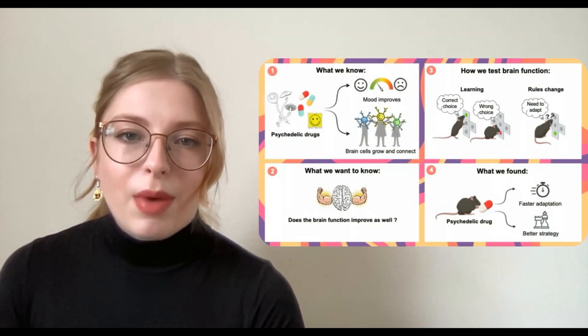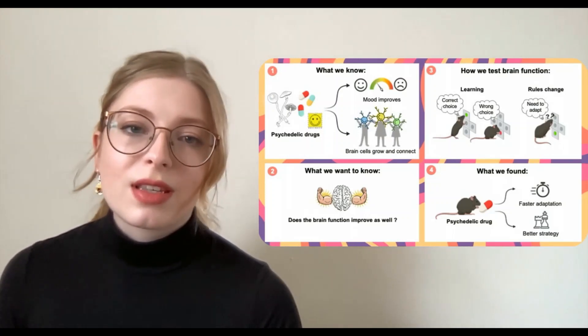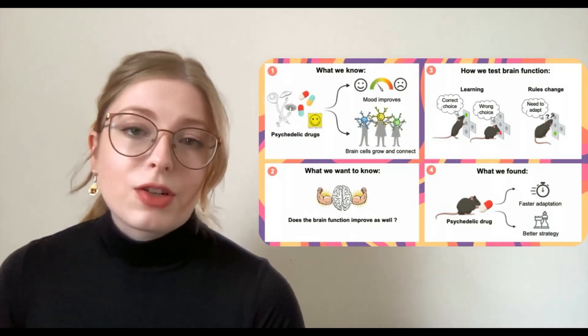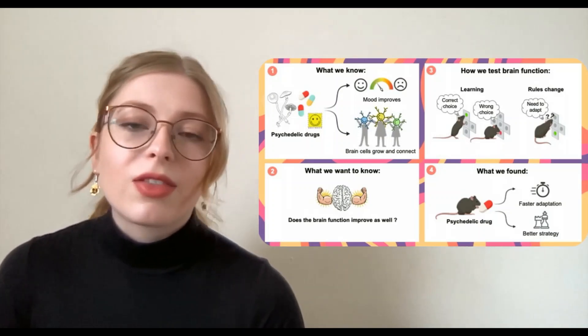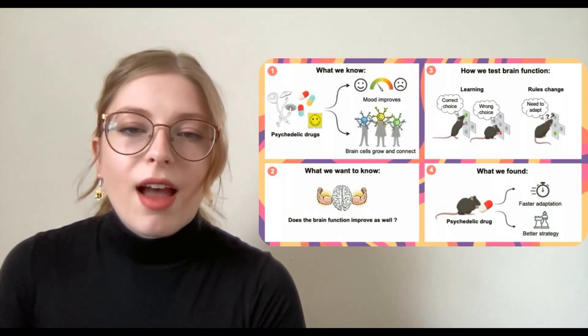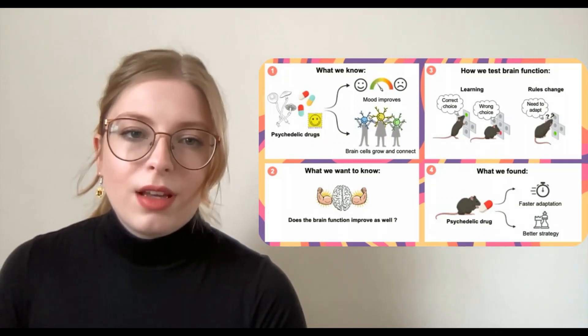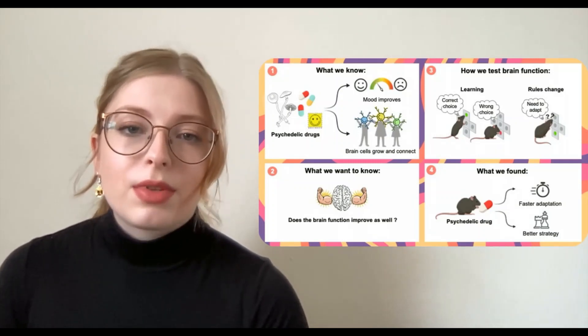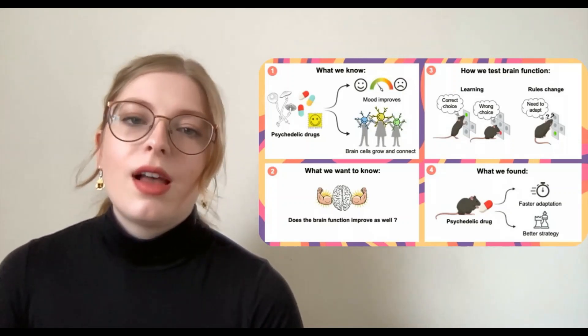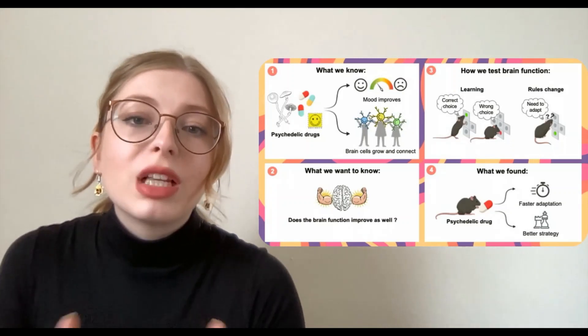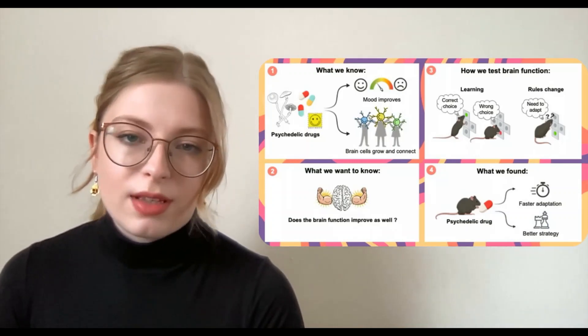We put a thirsty mouse in a box where it needs to make a series of choices to get a water reward. After a few weeks, the mouse learns the rules of what choices have what consequences to get the most rewards. But then I will suddenly change the rules. What the mouse needs to do now is adapt. It needs to change its choices to get the most rewards again. This is what I measure. How quickly was the mouse able to relearn the correct way of making choices?